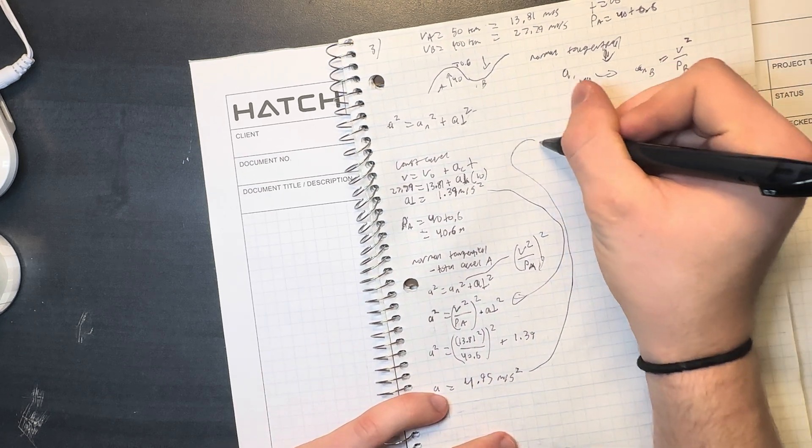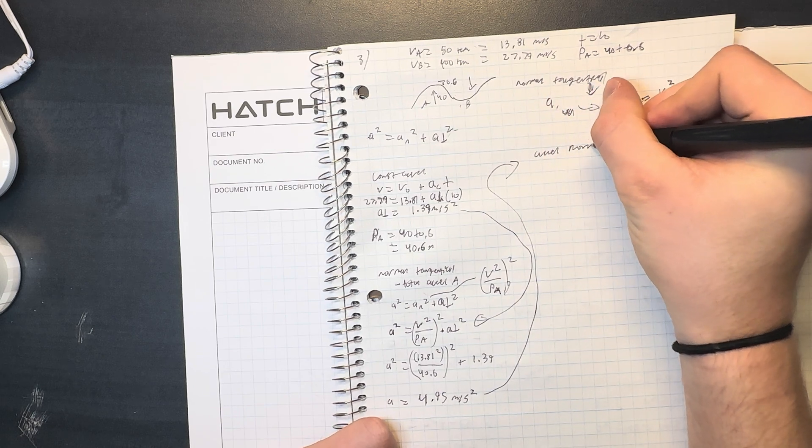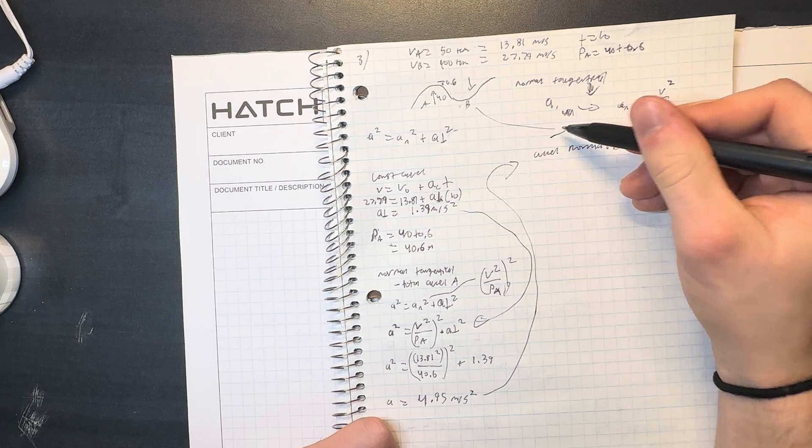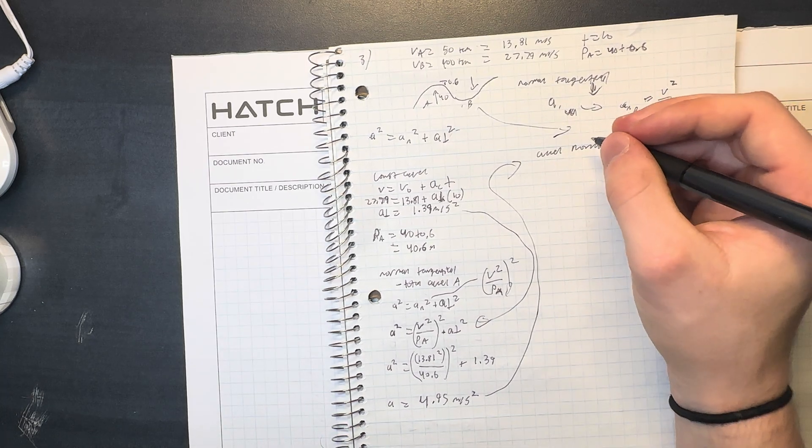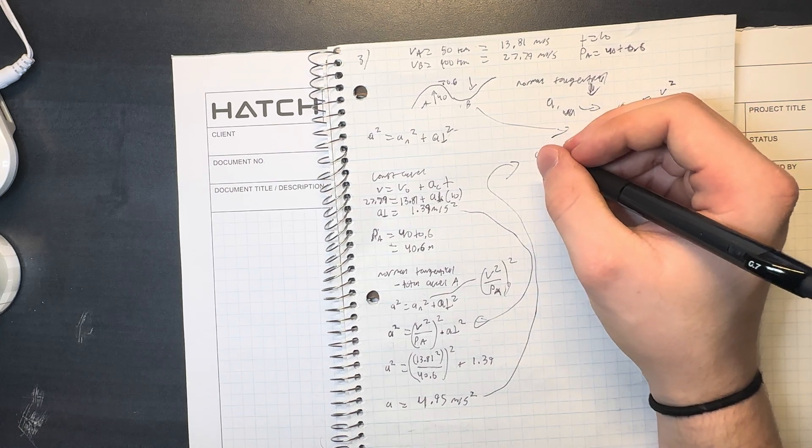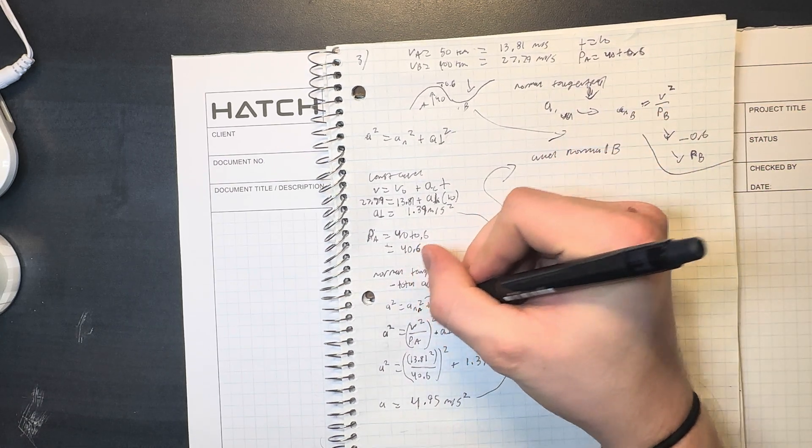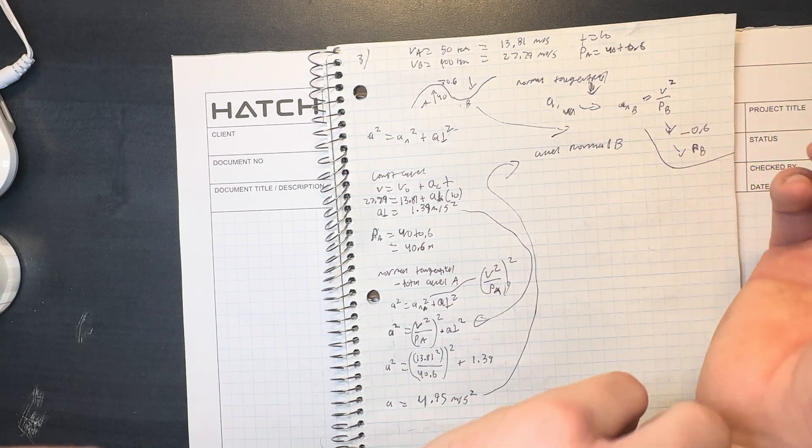Now we're going to take this and go back up here and we're going to solve for a_n at B, at the curve. So this is going to be the same formula, but this time we're solving for a_n at B. This was a the whole time, now we're going to solve for a_n at B.